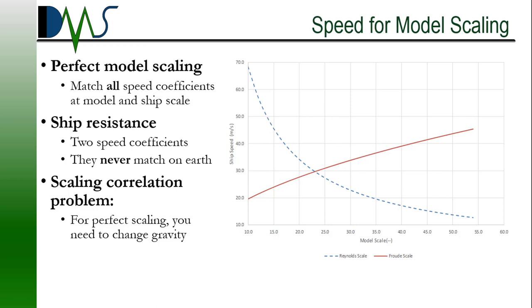You see, to convert from model scale to ship scale, you need to basically match the speed coefficient at both scales. This ensures the correct balance between the dominant forces at both scales, and allows you to correctly apply your force coefficients. And that's the crux of the scaling correlation problem.